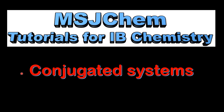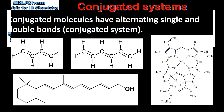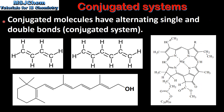This is MSJChem. In this video I'll be looking at conjugated systems. Conjugated molecules have alternating single and double bonds. The alternating single and double bonds are known as a conjugated system.